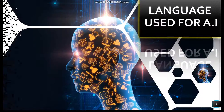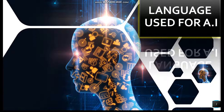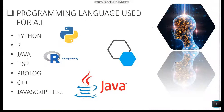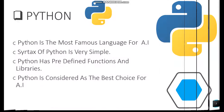Welcome to this session on artificial intelligence. In this lecture we are going to discuss the programming languages used for artificial intelligence. There are many programming languages used for artificial intelligence like Python, Java, Lisp, Prologue, C++, JavaScript, R programming language, etc.